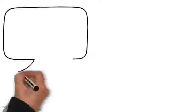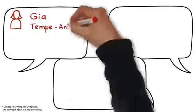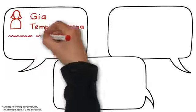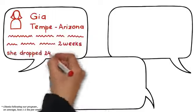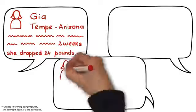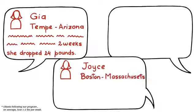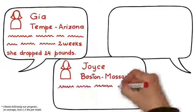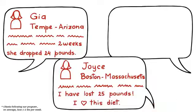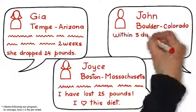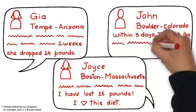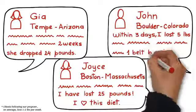Okay, here's what our most recent customers have said. From Gia in Tempe, Arizona. She writes, I had my 16-year-old daughter run through it once school let out. In two weeks, she dropped 24 pounds. Or how about this one from Joyce in Boston. Joyce writes, since starting this diet in April, I've lost 25 pounds. I love this diet. And then there's John from Boulder, Colorado, who said, within three days, I lost five pounds of fat and reduced my waist size by at least one belt buckle.